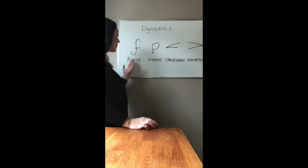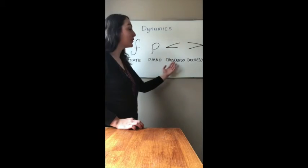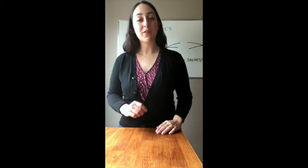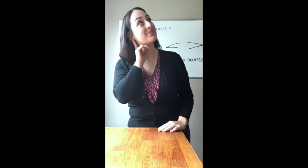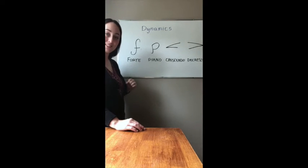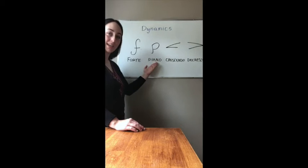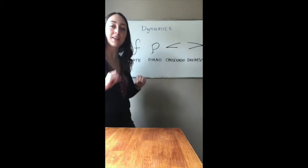So right now we're going to play a guessing game. I'm going to play you some sounds on my piano and you're going to tell me what you heard — whether it was forte, piano, crescendo, or decrescendo. Here's your first one, turn on your listening ears. Make your guess — which one did you think it was? The answer is that was a piano dynamic, so that was soft.